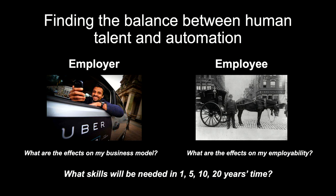We have two aspects of this problem: the employer's problem and the employee's problem. The employer typically asks: what are the effects on my business model if I introduce more automation? The employee considers their own employability. But both sides are thinking: what skills will be needed in one, five, ten, or twenty years' time? This year, for example, we had a big problem with coronavirus, and the skills needed were quite different from those needed in 2019 — some people simply couldn't do their work in the normal way.